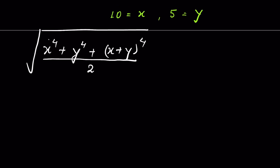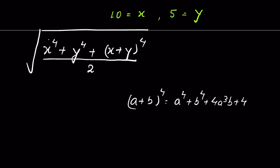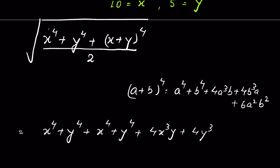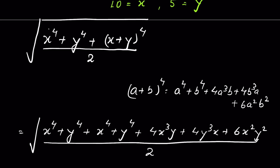For (x + y) to the power 4, we use the algebraic identity: (a + b)⁴ = a⁴ + b⁴ + 4a³b + 4b³a + 6a²b². Expanding using this formula gives us: x⁴ + y⁴ + x⁴ + y⁴ + 4x³y + 4y³x + 6x²y², all upon 2, under the square root.